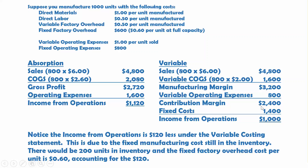There's a $120 difference, and where that comes in is the fixed factory overhead per unit. Because we manufactured 1,000 units but only sold 800, we had 200 units left in inventory. Under absorption, we spread this $600 over all 1,000 units, so the 200 left in inventory carry $0.60 per unit, or $120 — that $120 stays as an asset in inventory rather than coming out of costs. However, under variable, we take out the entire fixed costs, treating them just like period costs. So that $120 has come out of income under the variable system.